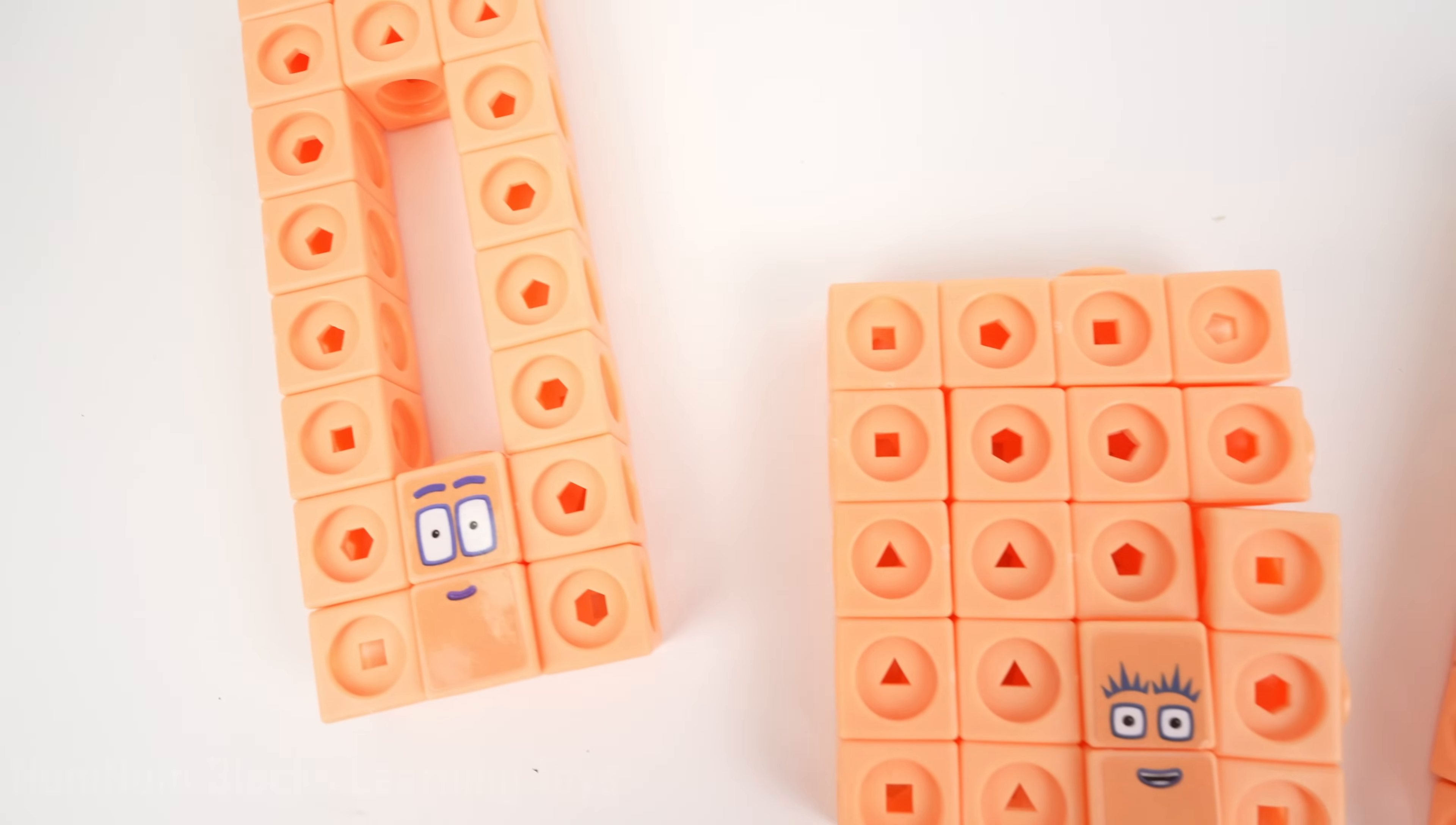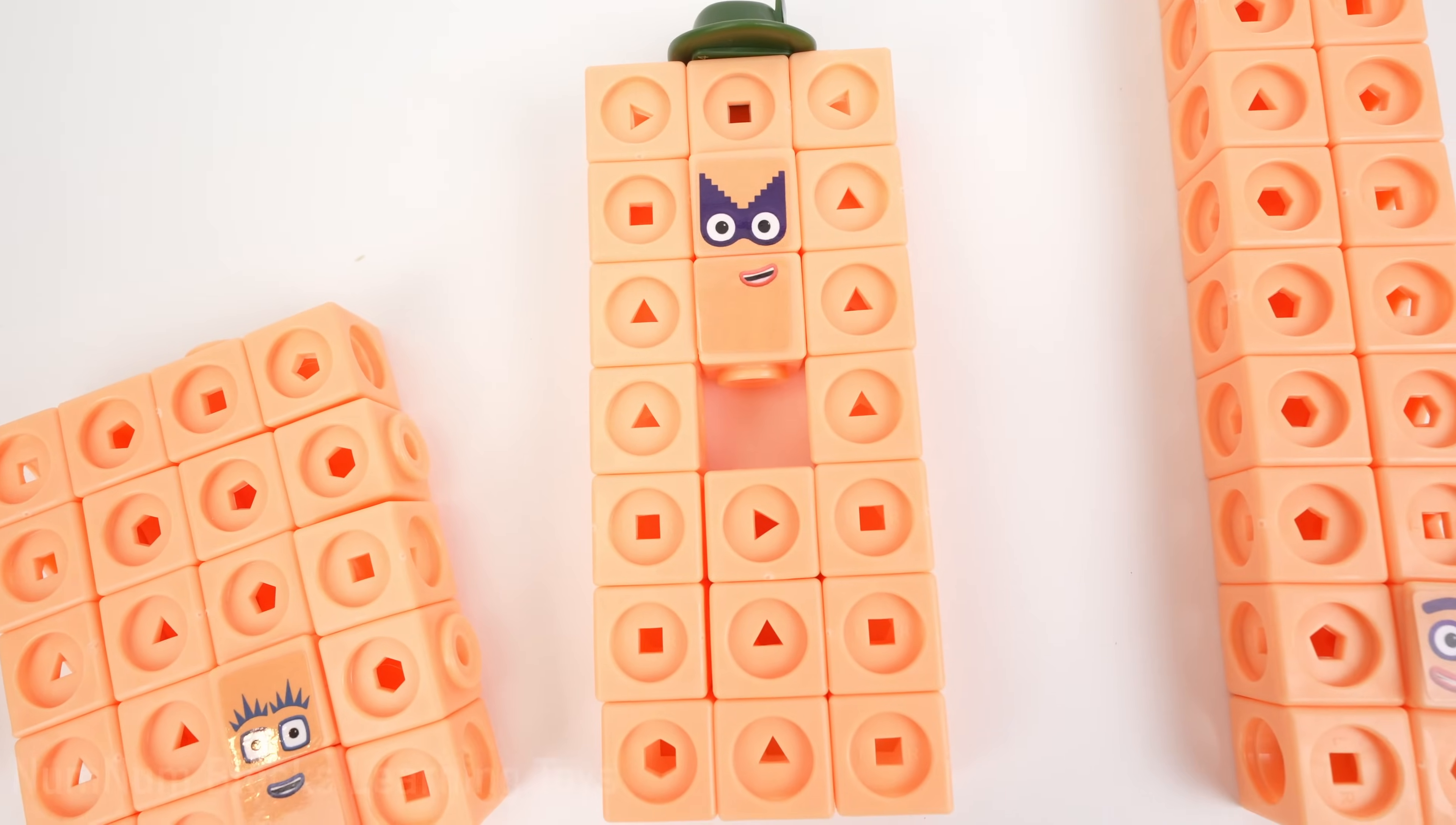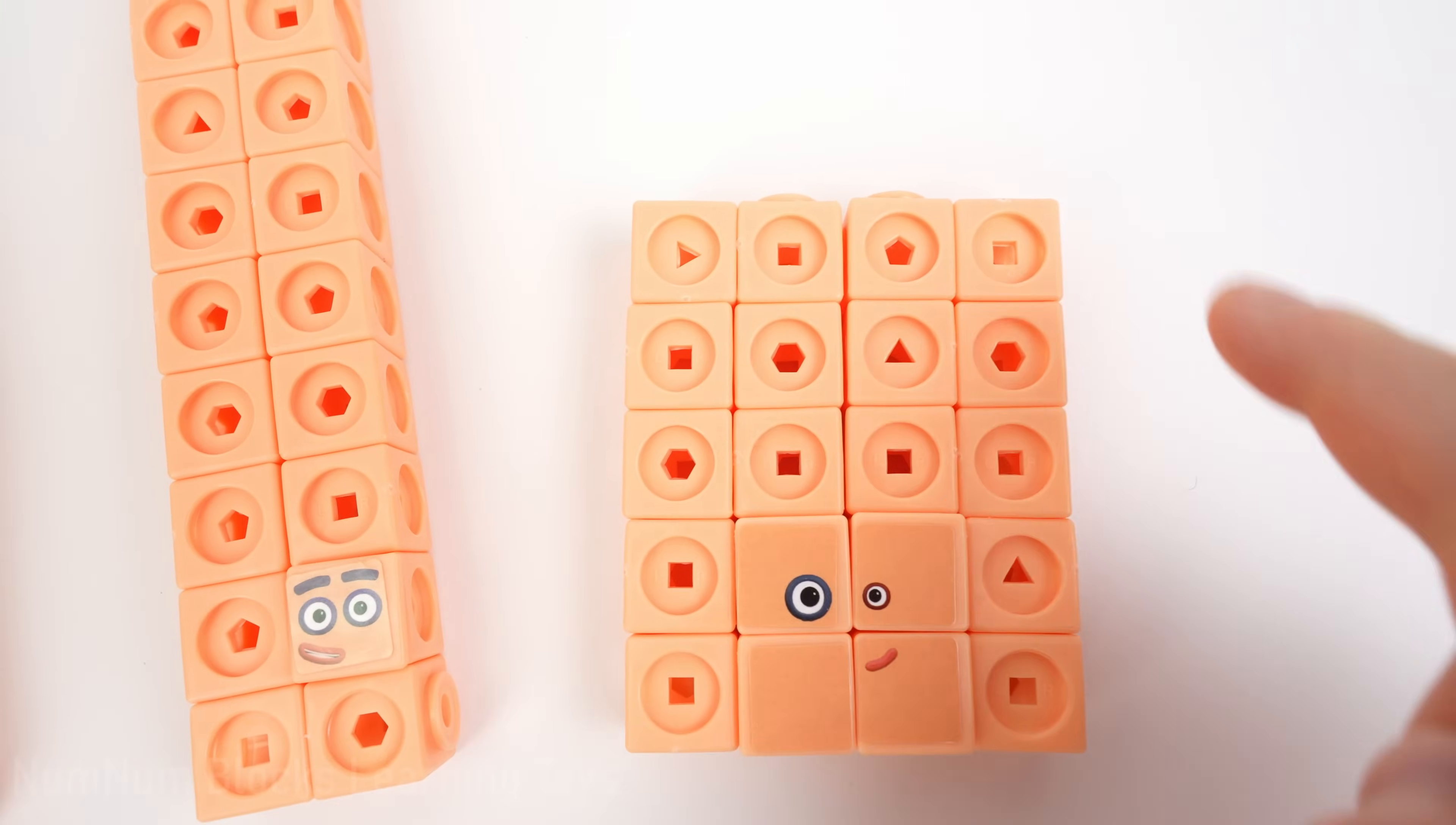Hey kids, look! We have five different peach-colored number blocks. Uh-oh, it looks like all of them are missing some numbers. Let's complete these number blocks with their missing numbers.